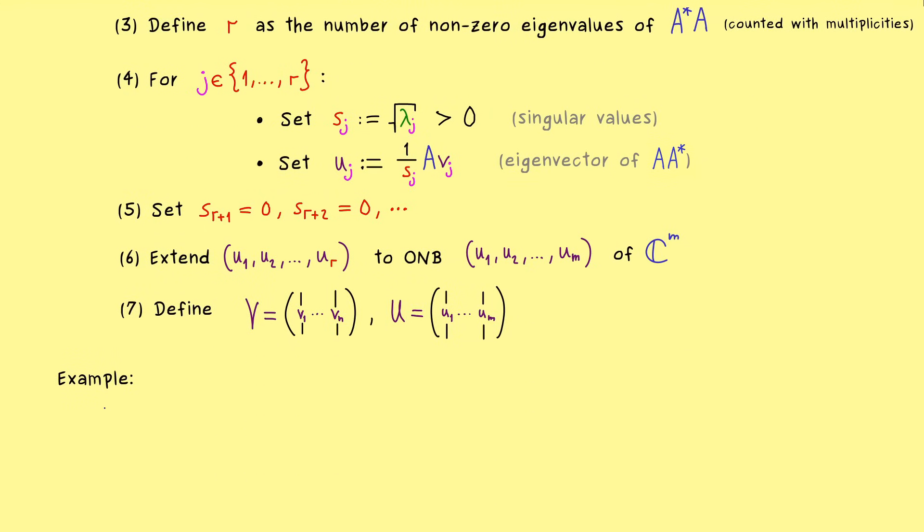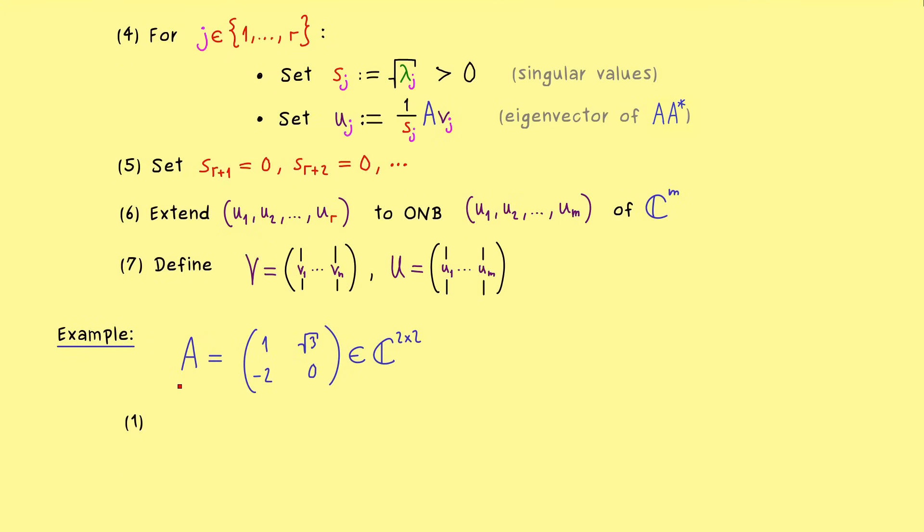With that I would say we are finally ready for a nice example calculation. I want to keep it simple, so let's take a 2 times 2 matrix. The entries are 1, square root of 3 and 2. So in this case we have a square matrix, which means there is no difference between n and m, so everything is a little bit simpler. But still we can go through all the steps, and let's start with point 1, where we have to calculate A star A. Not a complicated calculation, we get 5, square root of 3, square root of 3 and 3.